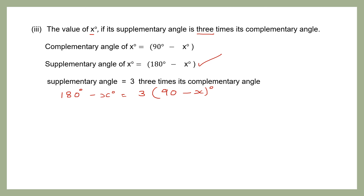I have written the supplementary angle as 180−x degrees, and that equals 3 times the complementary angle 90−x degrees. Now I multiply out: 180−x equals 3 into 90, which is 270, then 3 into minus x gives minus 3x. I am going to regroup — putting x terms on the left-hand side and whole numbers on the right-hand side. On the left I keep minus x degrees; on the right I keep 270 degrees.